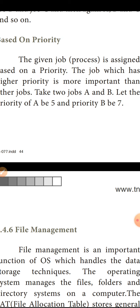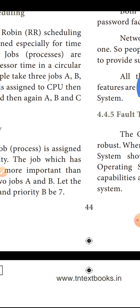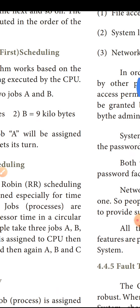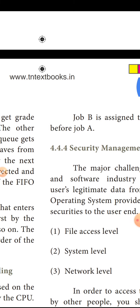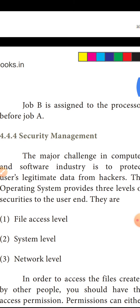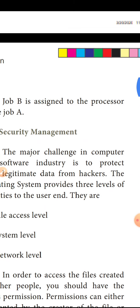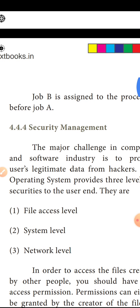So, job B is assigned to the CPU before job A, because B has higher priority. Job B is processed first, then job A is assigned.